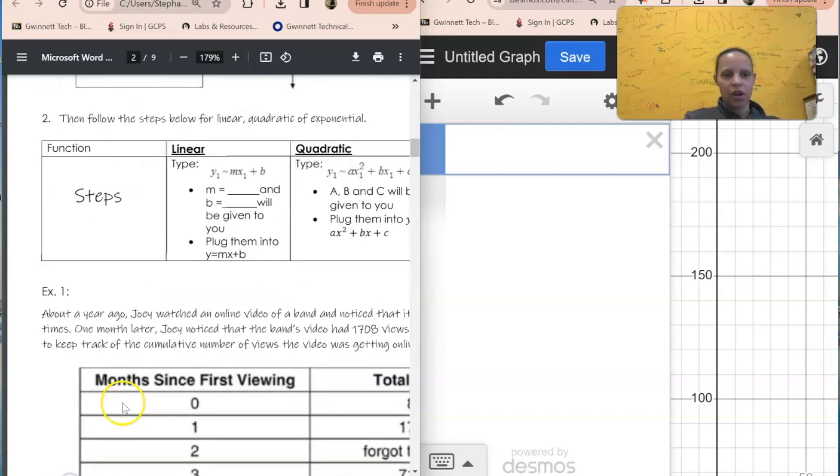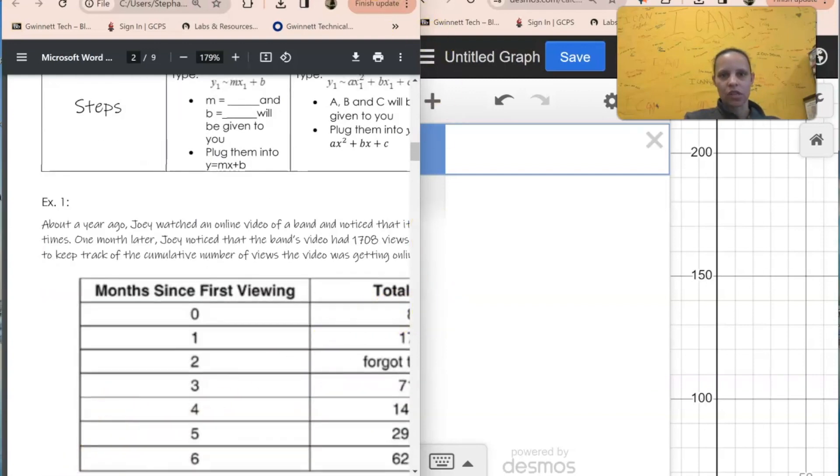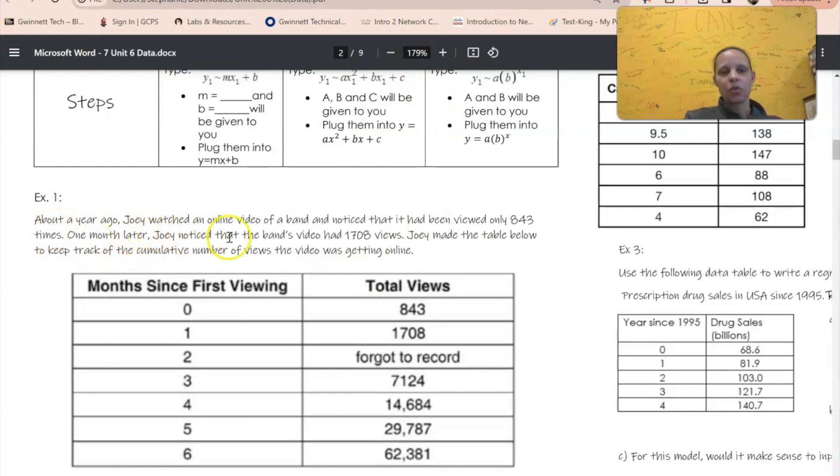All right, so here's our question. It says about a year ago, Joey watched an online video of a band and noticed that it had been viewed only 843 times. One month later, Joey noticed that the band's video had been viewed 1,708 views. Joey made the table below to keep track of the cumulative number of views the video was getting online. So months since first viewing - zero months, this is what it was. After the first month it was this, the second month he forgot to record.